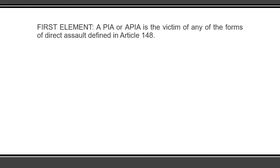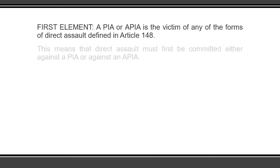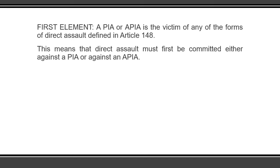The first element is: a person in authority or an agent of a person in authority is the victim of any of the forms of direct assault defined in Article 148 of the Revised Penal Code. There are two kinds or forms of direct assault — direct assault of the first form and direct assault of the second form. This means that direct assault, whether of the first or of the second form, must first be committed either against a person in authority or against an agent of a person in authority before the crime of indirect assault can exist. The crime of direct assault is a condition sine qua non to the existence of the crime of indirect assault.